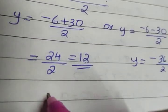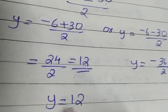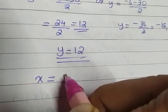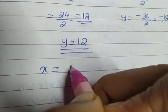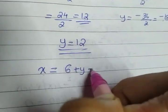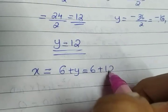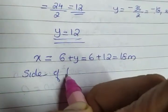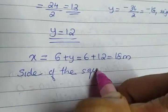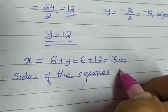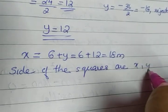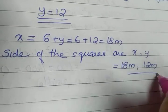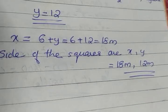So the side of the second square y equals 12 meters. To find x, we use equation two: x equals 6 plus y, which is 6 plus 12, giving x equals 18 meters. Therefore, the sides of the two squares are 18 meters and 12 meters.